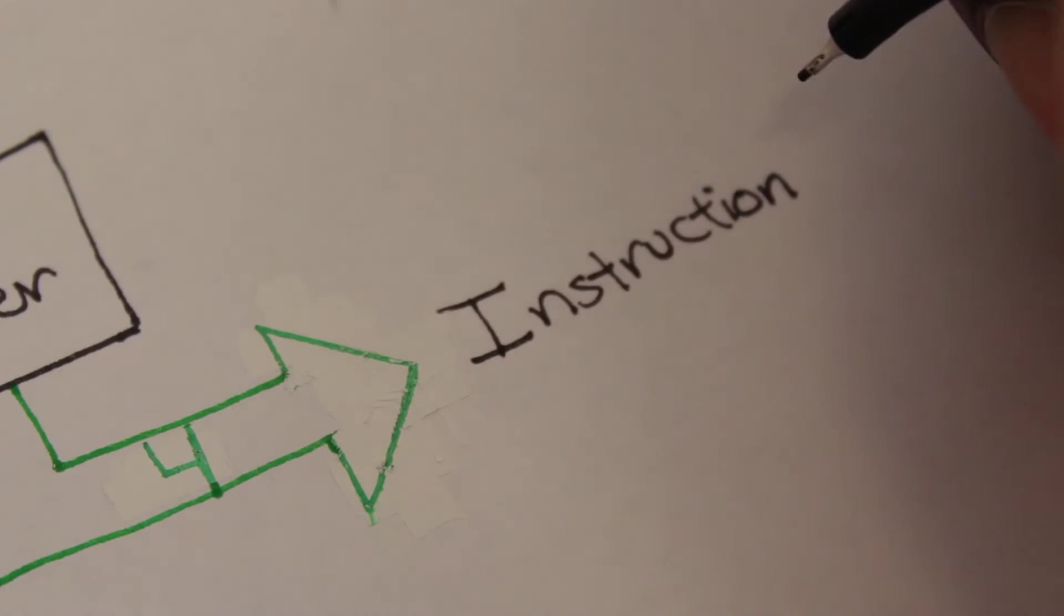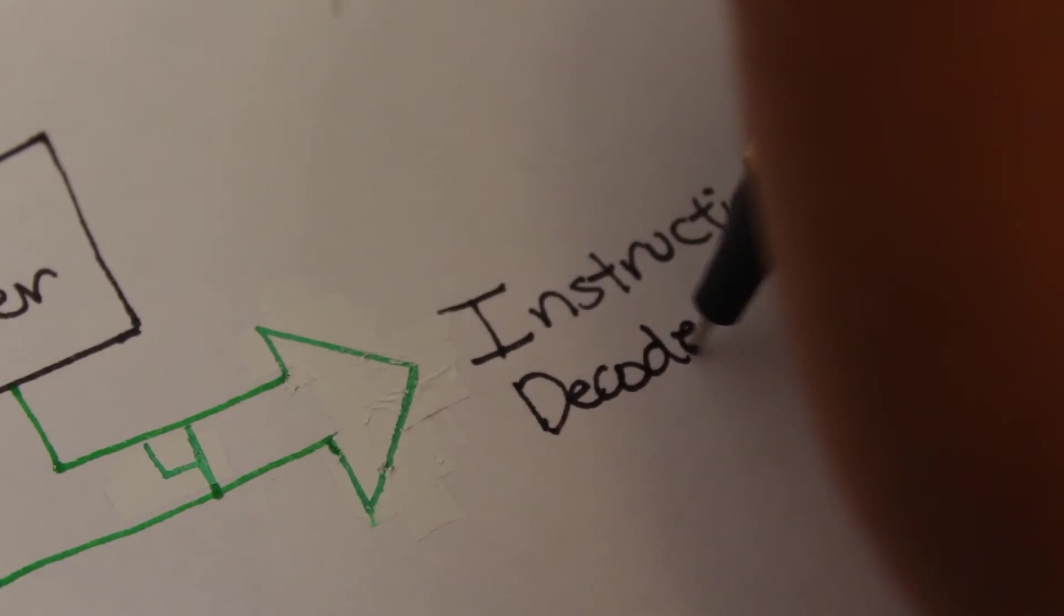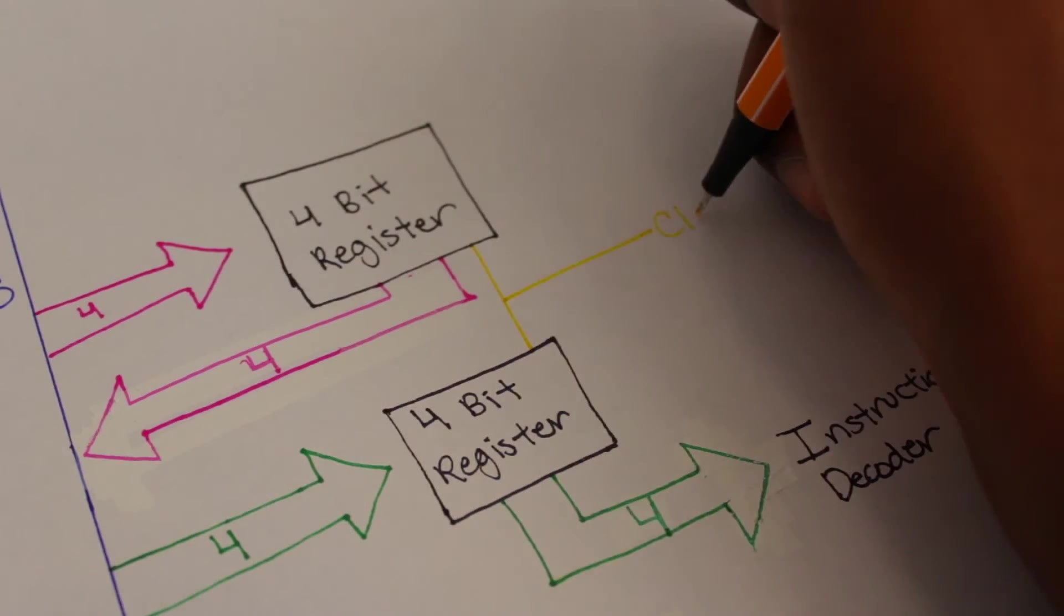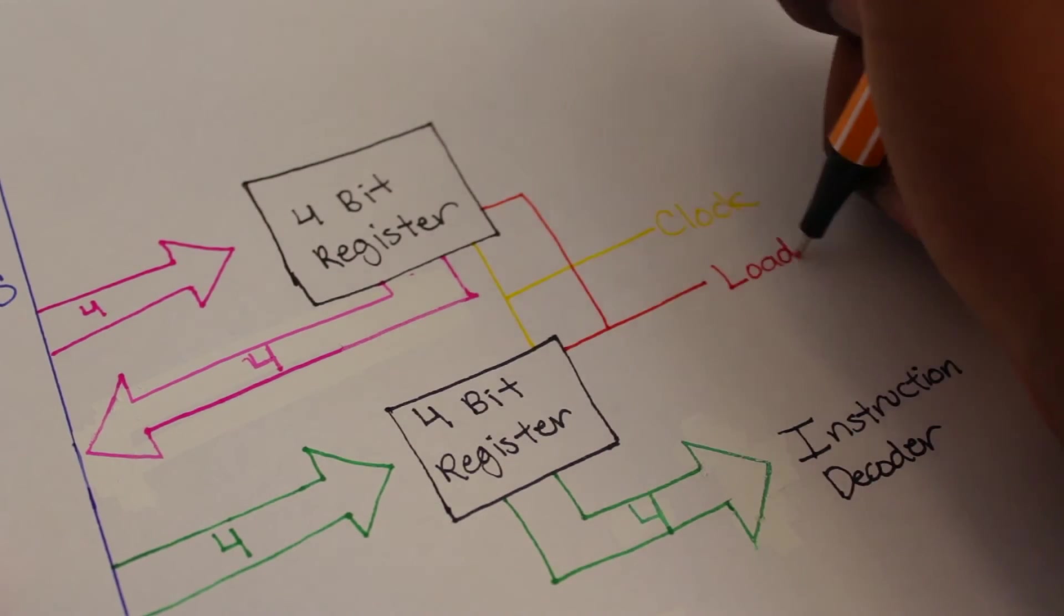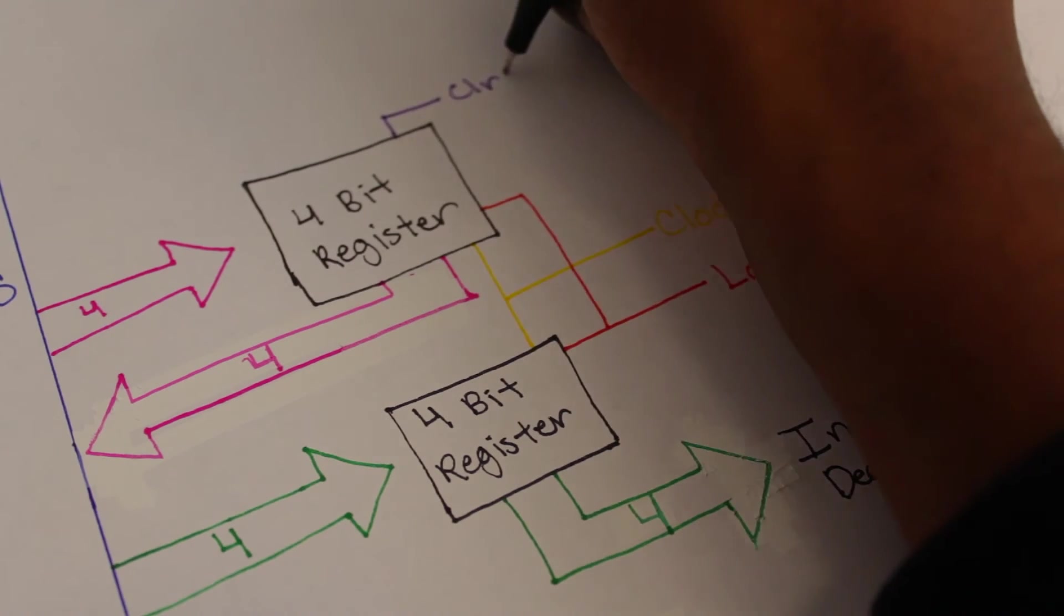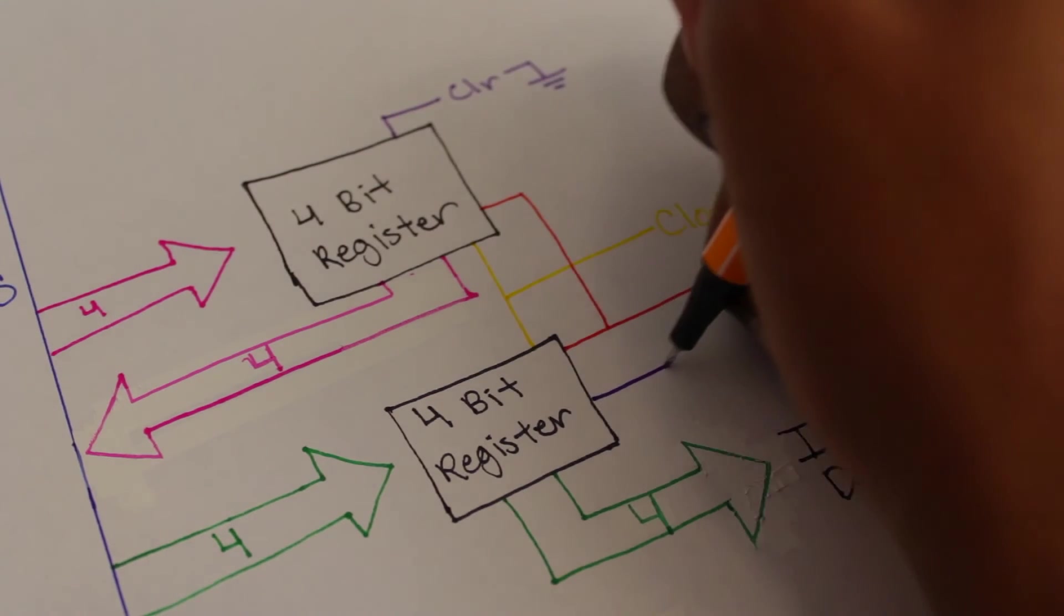This does exactly what you think it does. It takes the bit values of the instruction and says, 'Well, what does this mean and what do we actually have to do?' As for the other lines, the two registers' clocks are connected together, as well as their load lines. The clear line of the memory address register is connected to ground so it never clears.